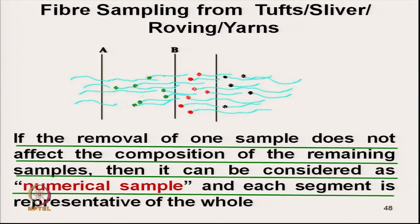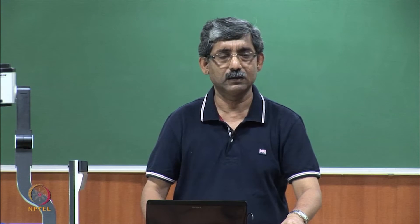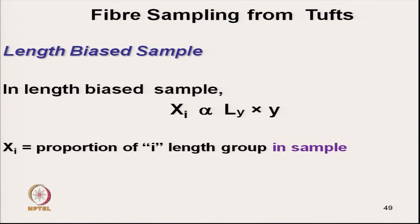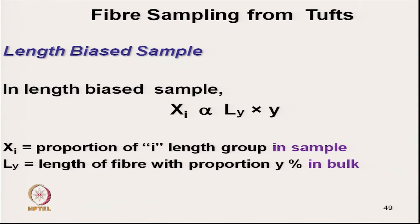Now let us see how to get the numerical sample and also the length-biased sample. In a length-biased sample, Xi is proportional to Ly multiplied by Y, where Xi is equal to the proportion of the i-th length group in the sample, and Ly is equal to the length of the fibre with proportion Y percent in bulk. So X is talking about the sample and Y is talking about the bulk.